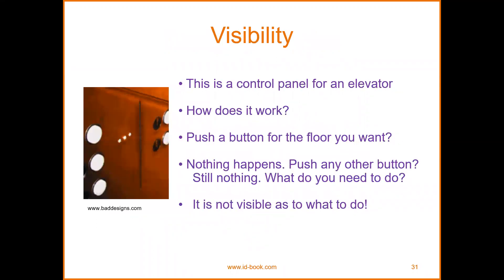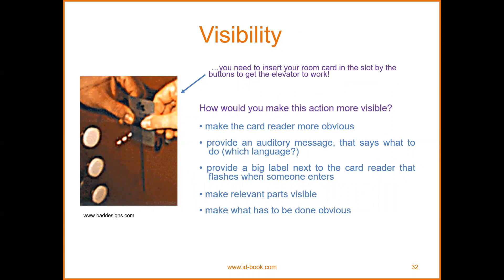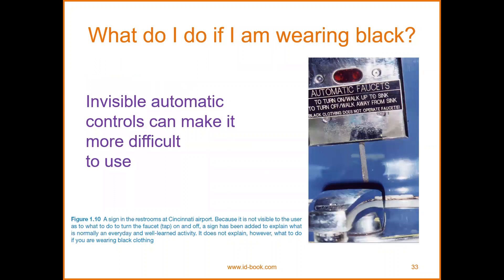Regarding visibility: a control panel for an elevator — how does it work? Push the button for the floor you want. In the past there were no numbers, just round buttons; now numbers indicate floor levels, making it visible. How do you make actions more visible? Make the card reader more obvious; use auditory messages telling what to do. Modern elevators now use voice recognition and sensors. But what do you do if you are wearing black? Invisible automatic controls can make it more difficult to use.